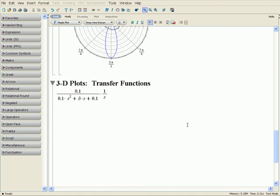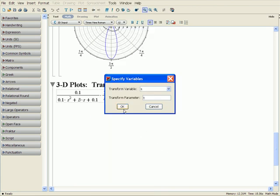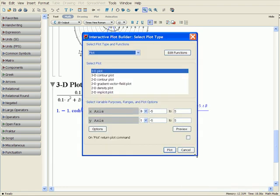Now let's look at some 3D plots. Here is a transfer function in the S domain, which includes an unknown parameter, B. We can create a 3D plot of the step response. We first find the inverse Laplace transform, and again use the Plot Builder to create our plot.